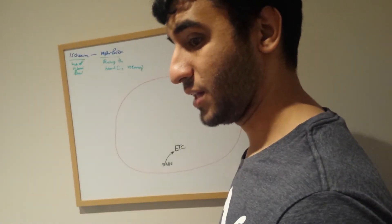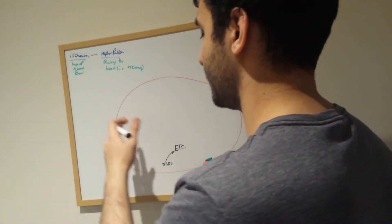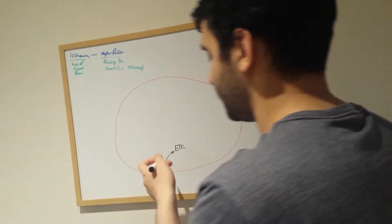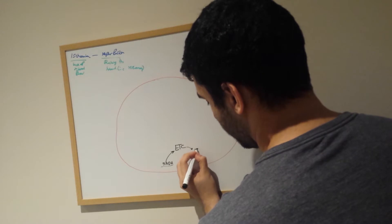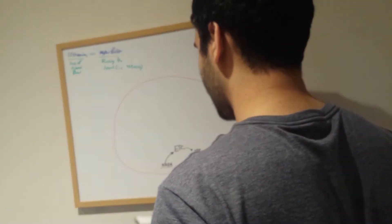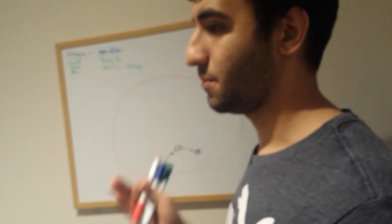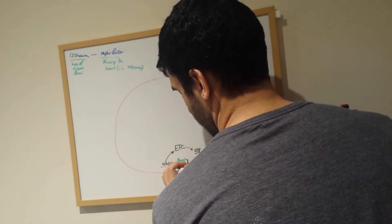The TCA cycle uses the pyruvate from the glycolysis pathway. I'm not going to go into too much detail on that, but pyruvate goes to the TCA cycle, forming plenty of NADHs and FADH2 electron carriers. These electron carriers go to the electron transport chain and eventually form ATP — using ATP synthase, for example. Now we have plenty of ATP that can be used to run the cellular machinery. This is aerobic respiration.